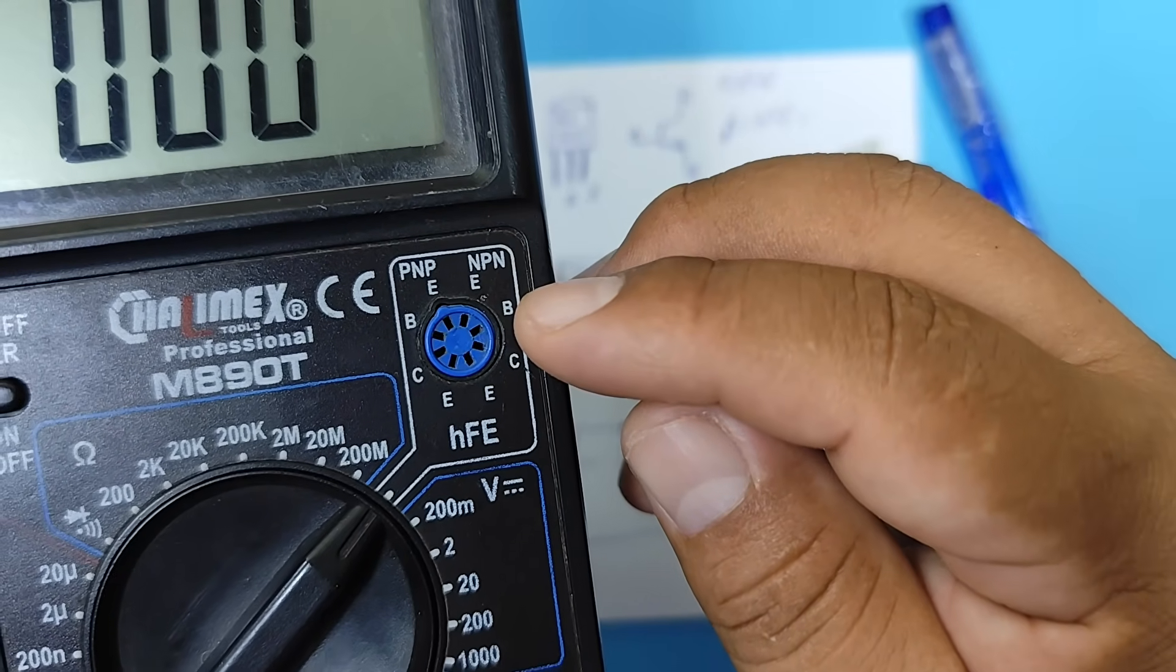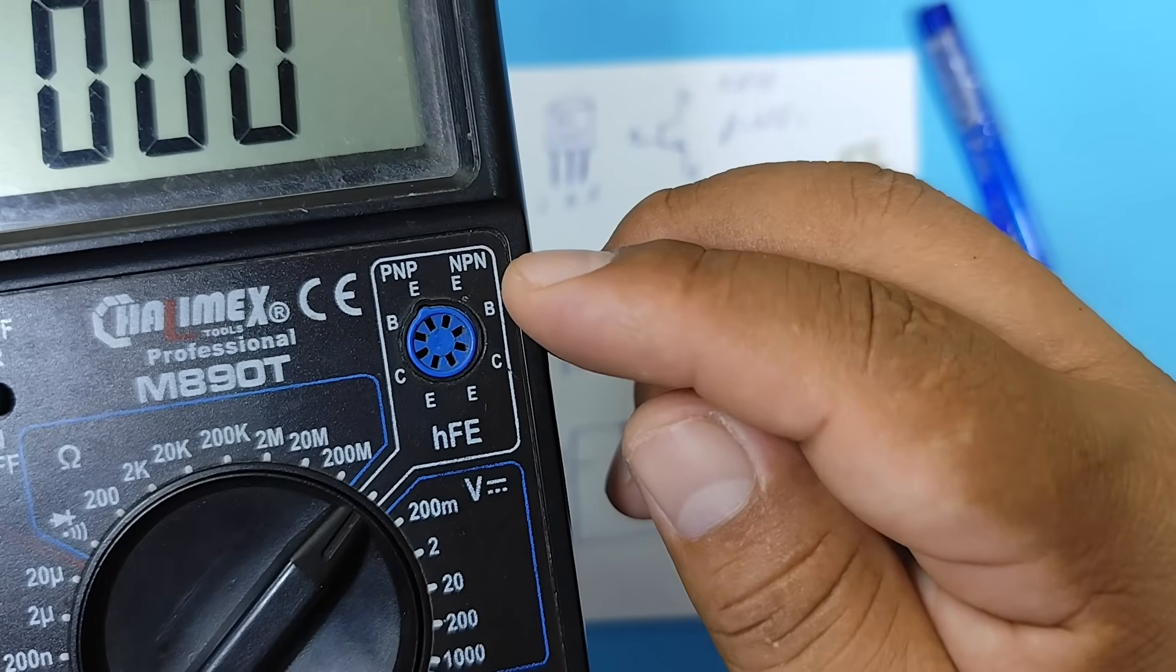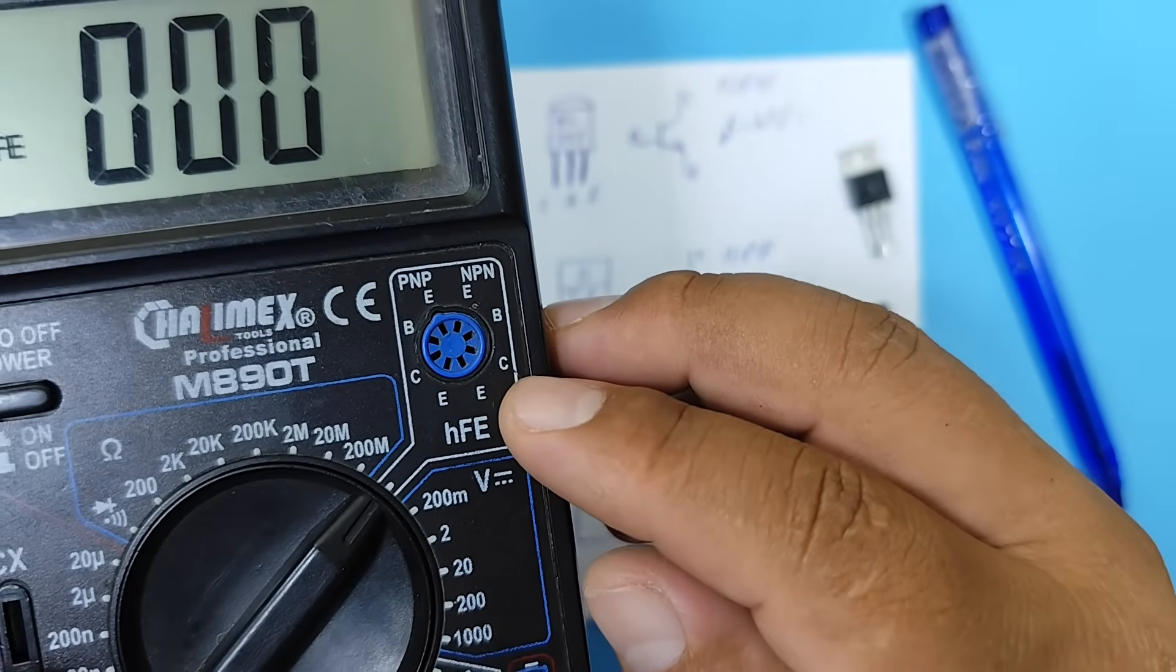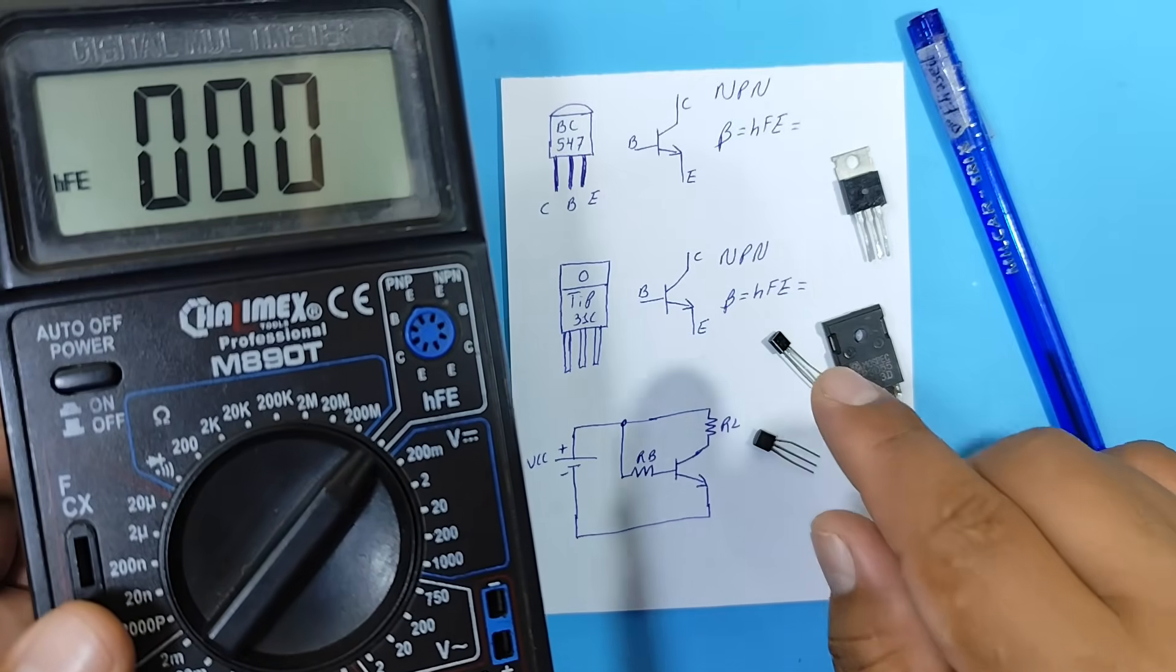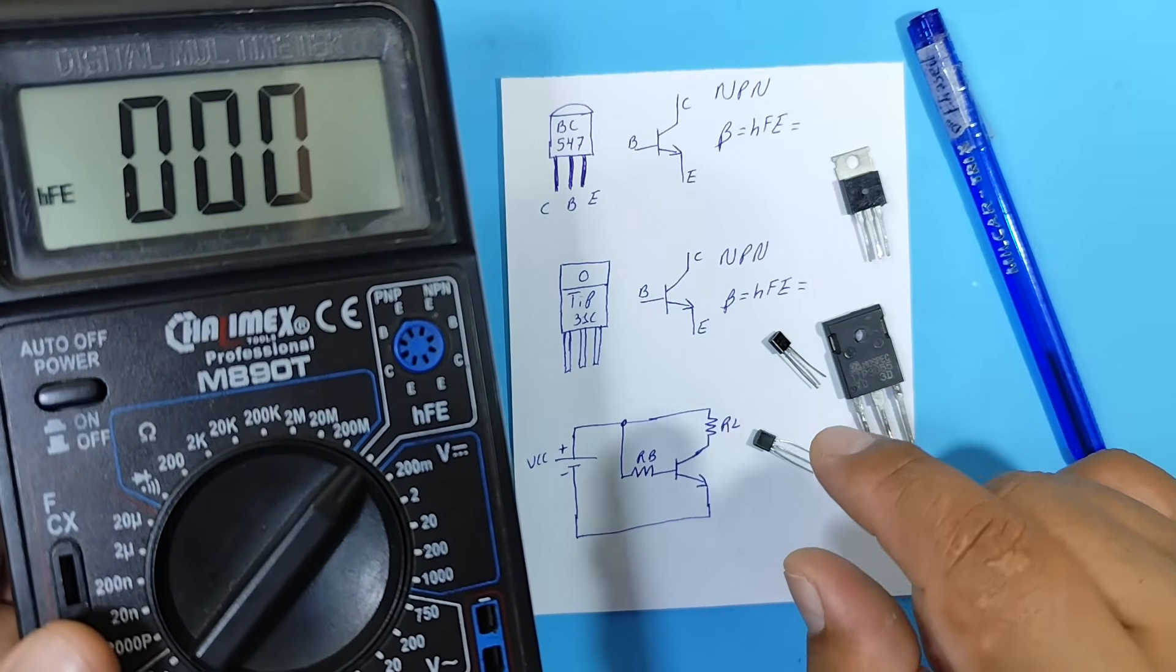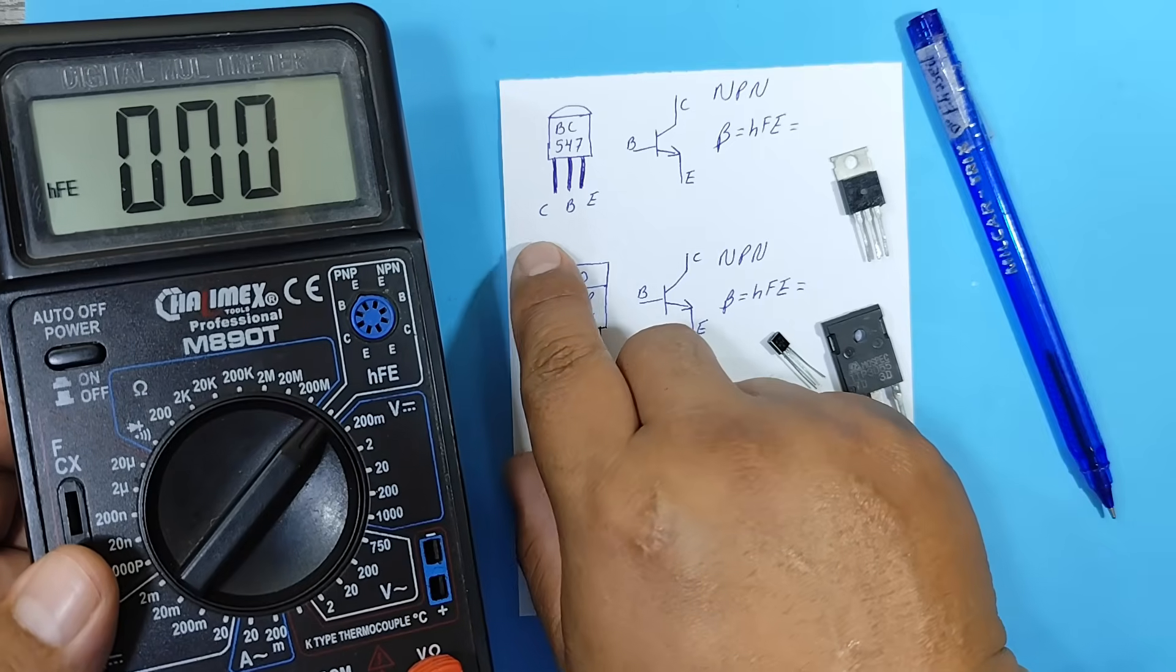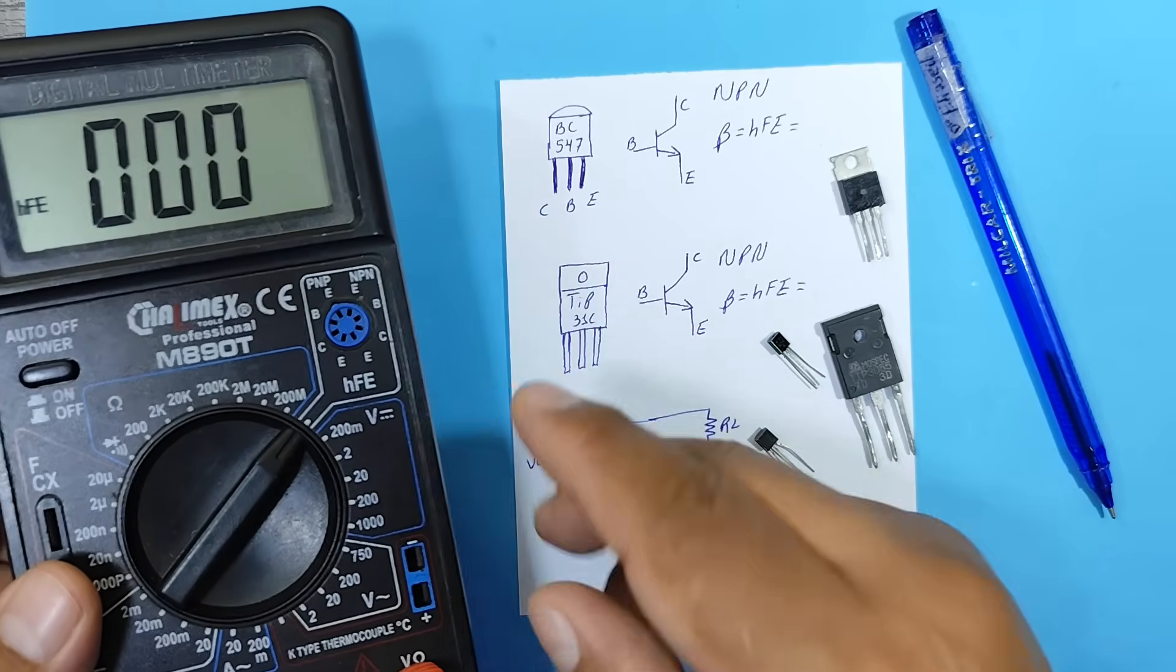There, we can see different holes indicating emitter, base, collector, and emitter. Therefore, we need to know if our transistor is NPN or PNP. And we also need to know the pinout. Collector, base, and emitter.